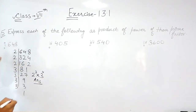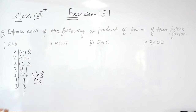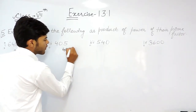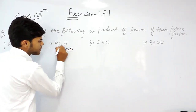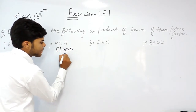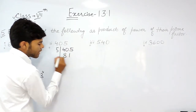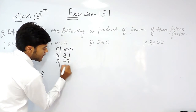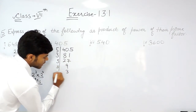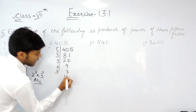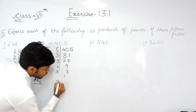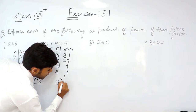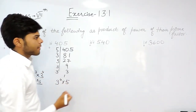Similarly, for 405: 5 times 81, 3 times 27, 3 times 9, 3 times 3, and 1. So this can be written as 3 to the power 4 multiplied by 5.